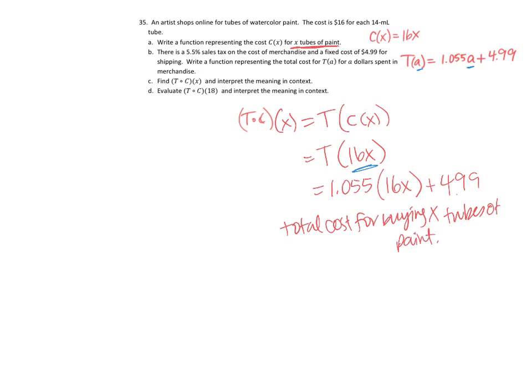And that makes sense because what do I do? I take the number of tubes of paint and multiply by $16 per item, then I multiply by the tax, and then I add the shipping. So that's what's happening here—I take the tubes of paint times 16, multiply by the tax, and then I add the shipping.